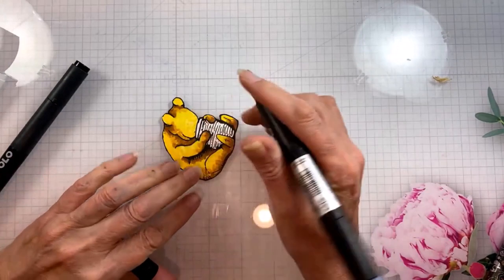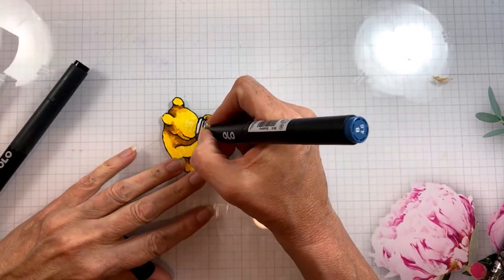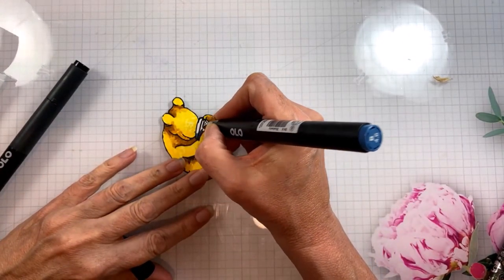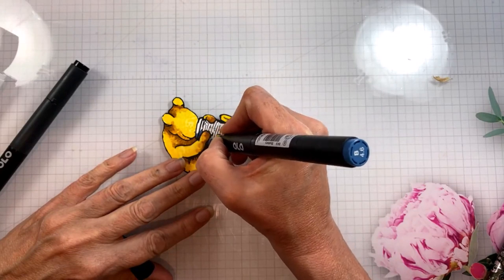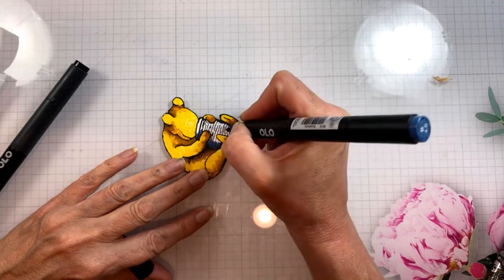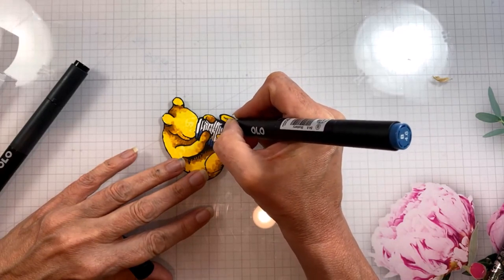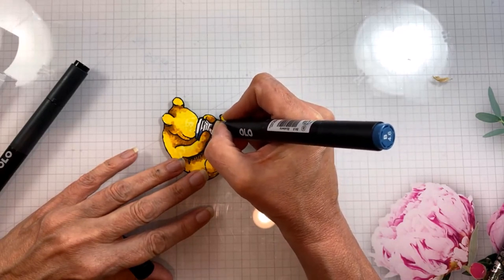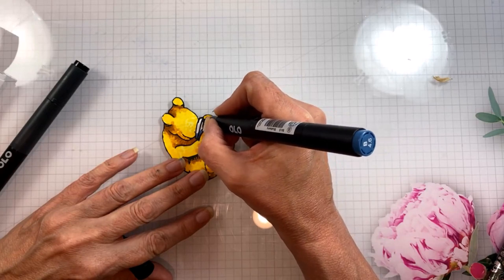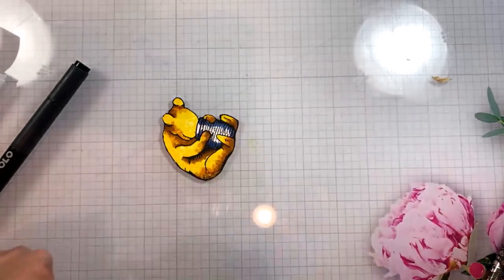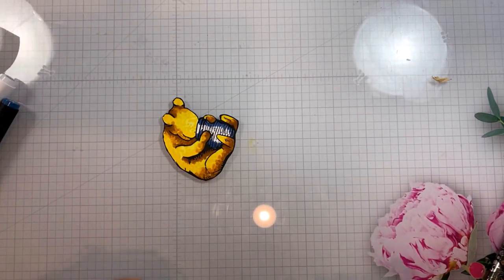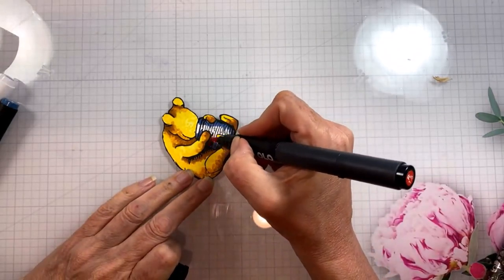Now I'm going to color his little honey pot. I start with a blue marker, the B4.6, and I'm adding shading at the edges and the bottom of the pot. I'm going to try to leave a highlight.